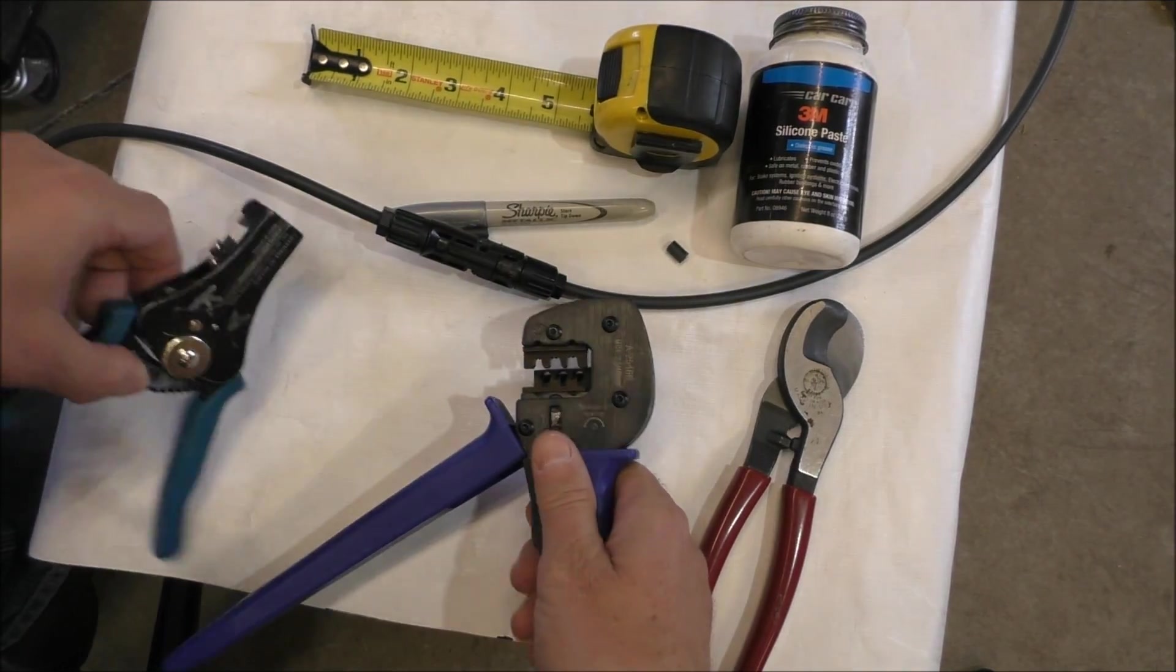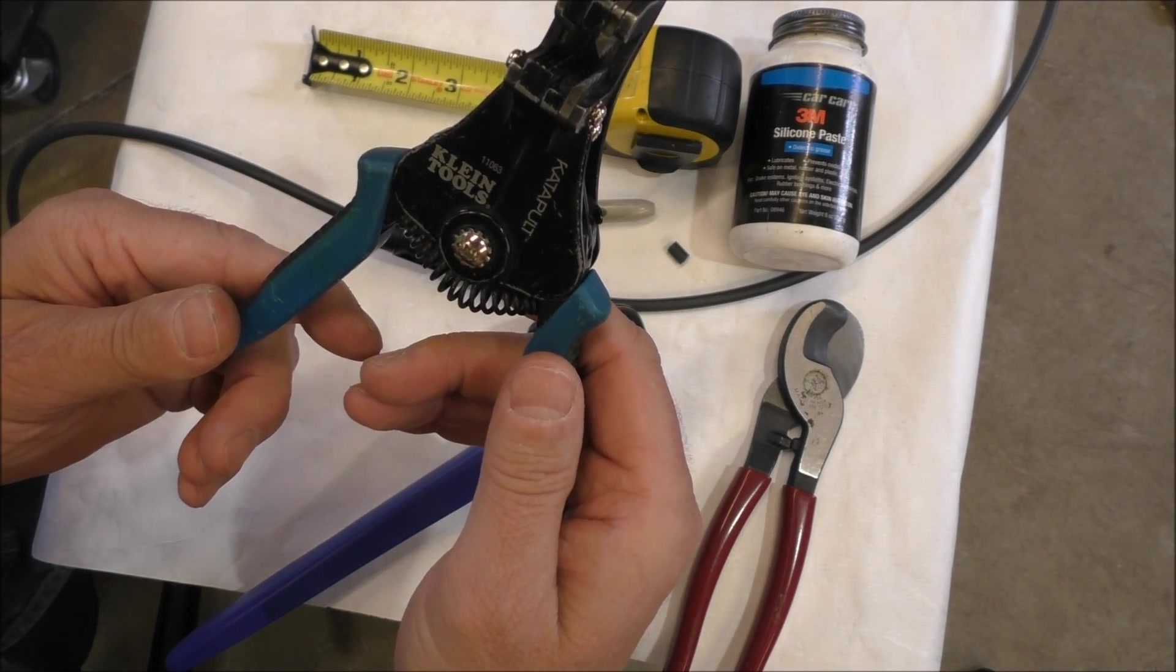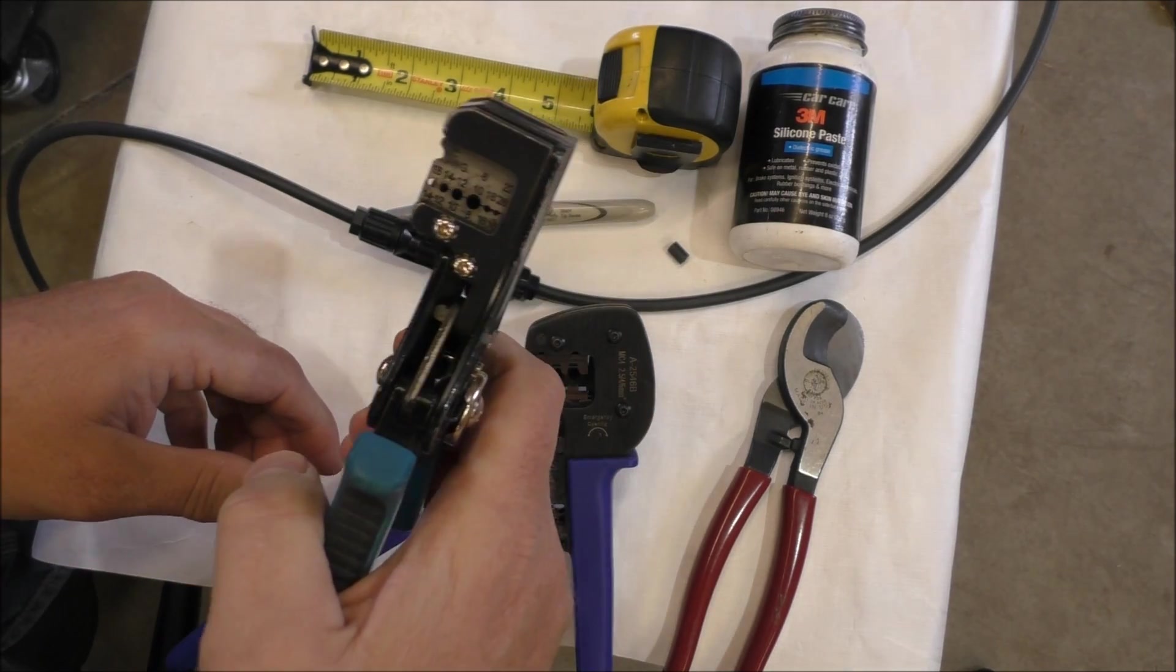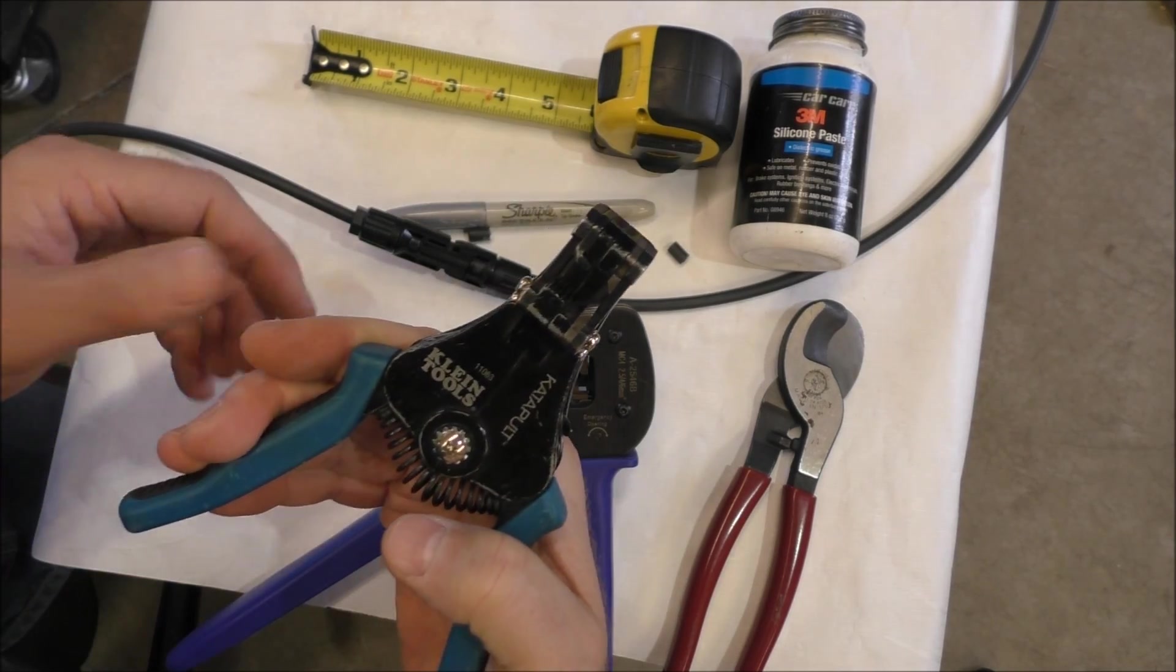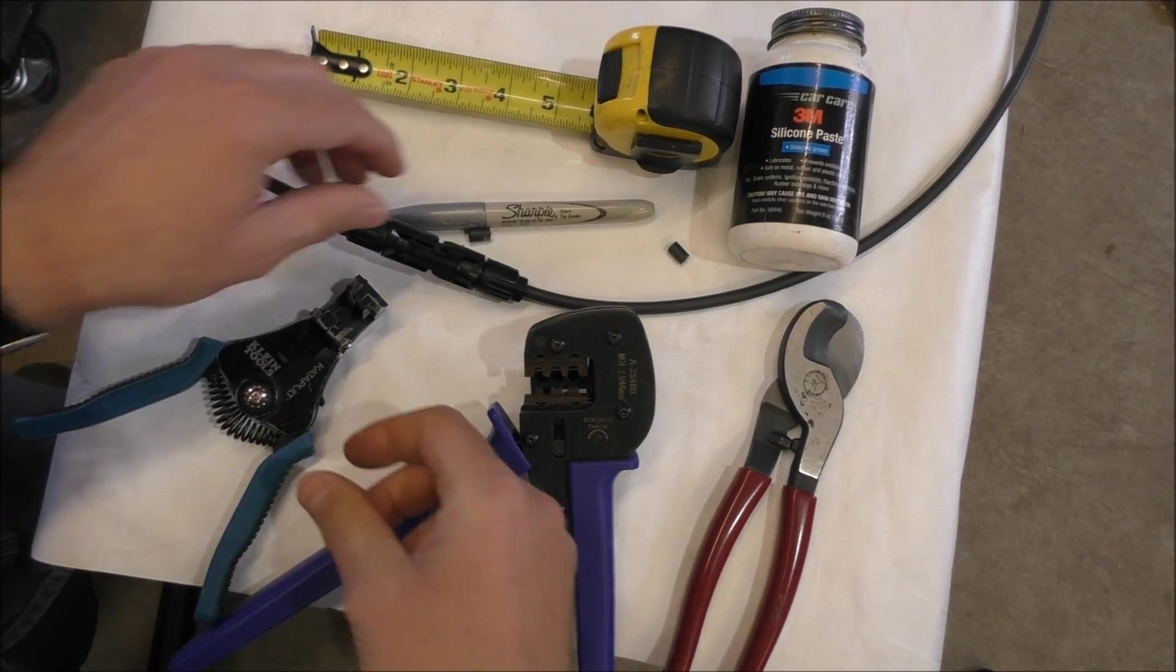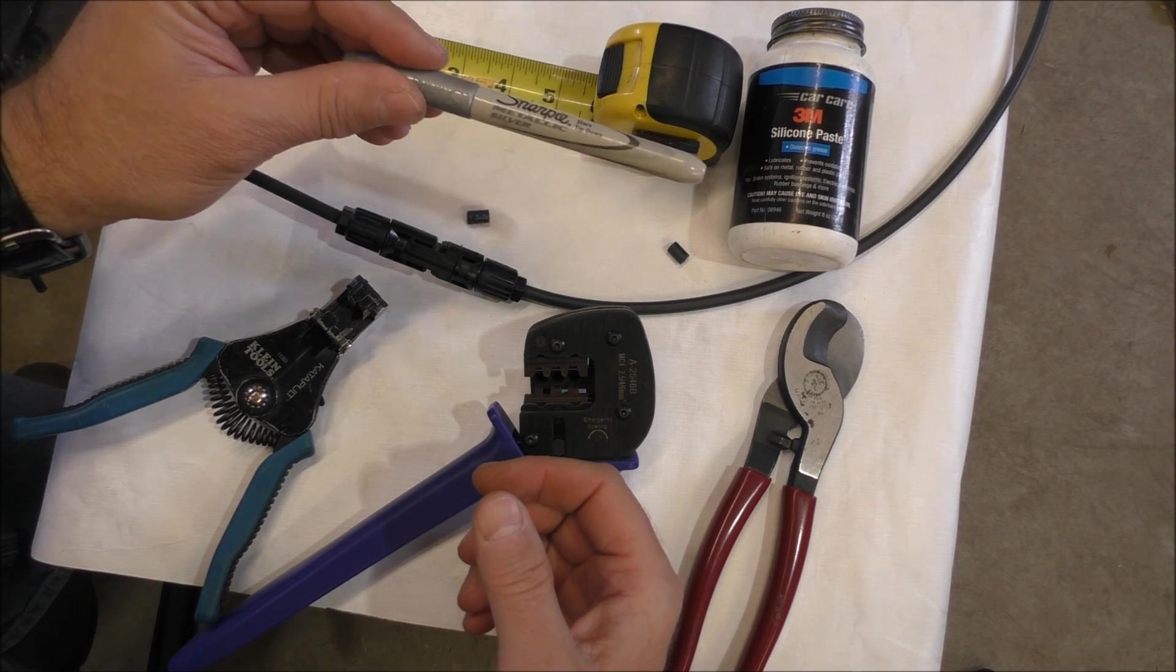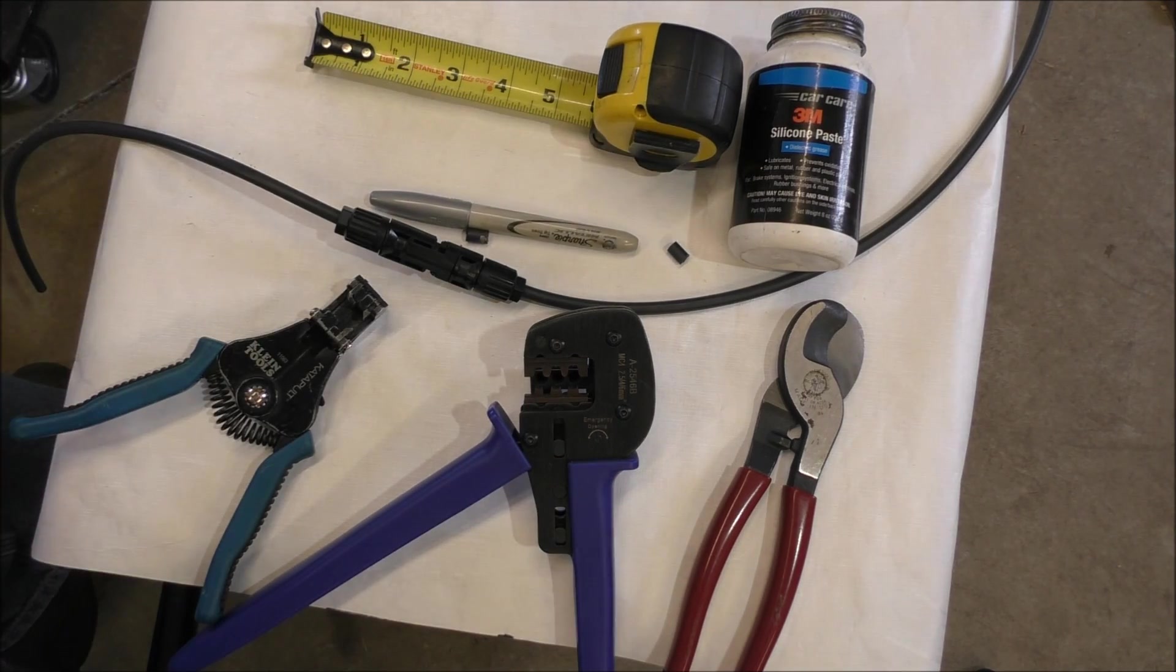And like I said, Klein Catapult, Klein tool 11063 - great tool, awesome, good to have. And a marker - a silver metallic marker on black.